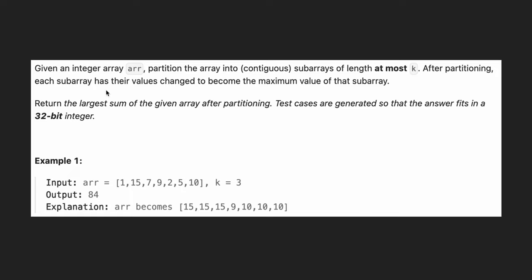Hi everyone, it's Sorkin. Today we have a problem where we are given an array and we need to partition it into contiguous subarrays of length at most k. After partitioning, each subarray has its value changed to become the maximum value of that subarray.